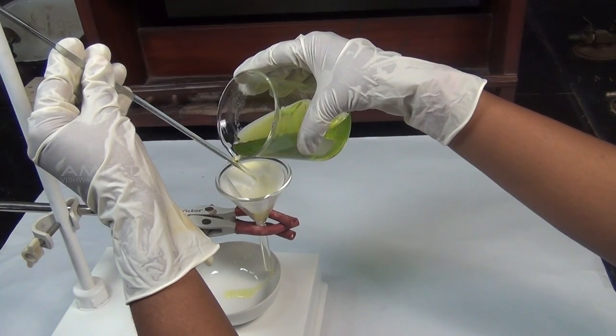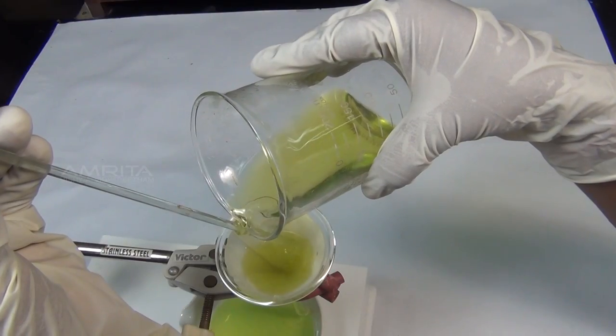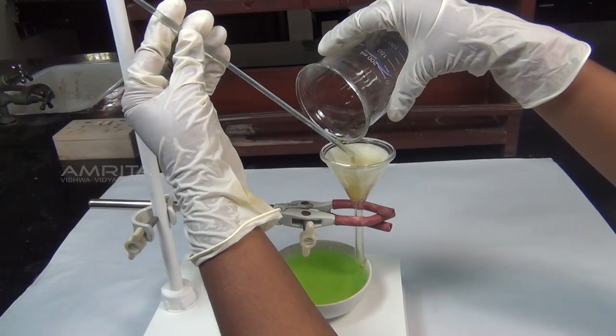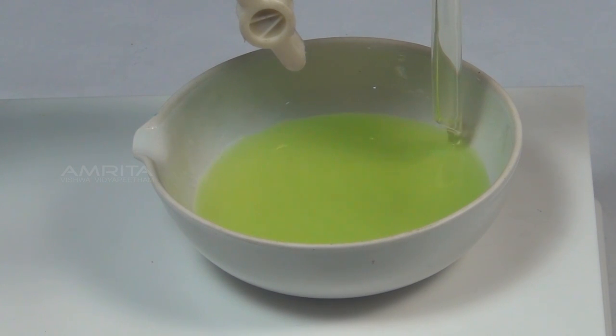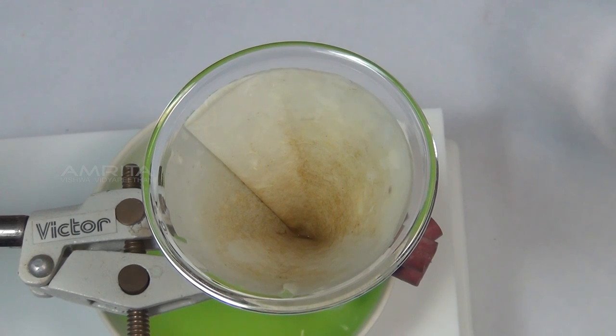Then filter the solution into a china dish using a funnel and filter paper. The stem of the funnel should touch the wall of the china dish to avoid the solution splashing out. After filtration, the insoluble impurities are left behind on the filter paper.